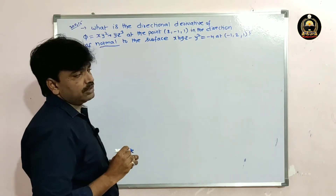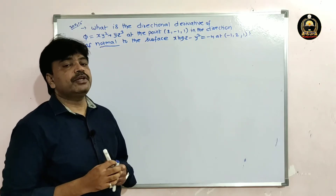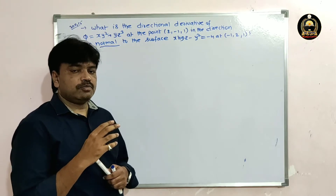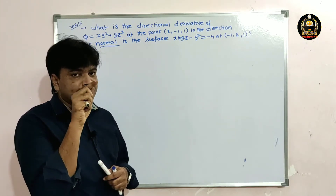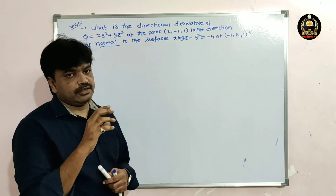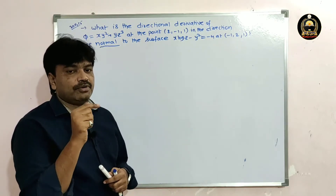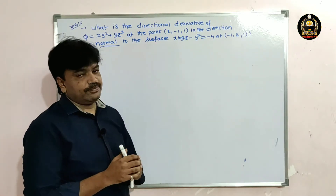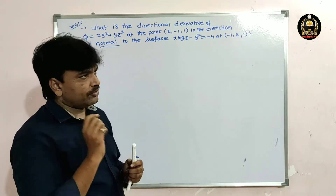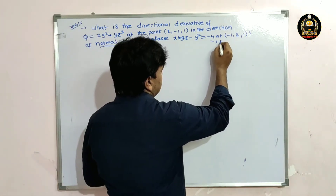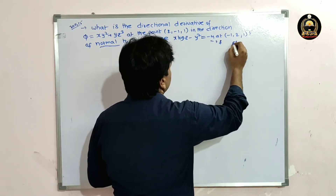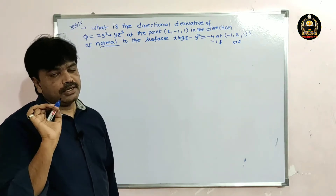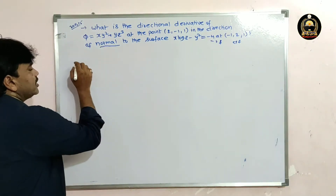Normal to the surface — now, previously we solved one problem where a vector 'a bar' was given as the direction vector. Now he gives the direction as the normal to the surface. Let's say this surface is f. What is the normal? The normal is del f.